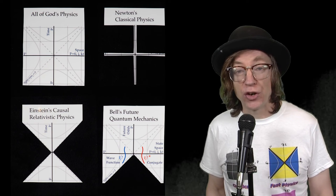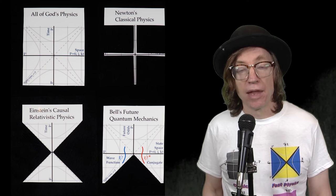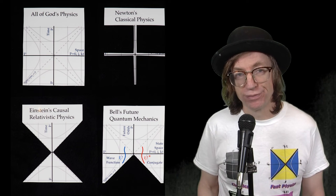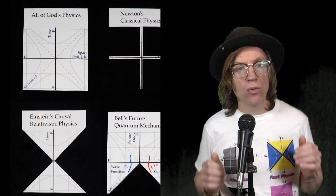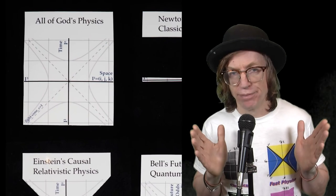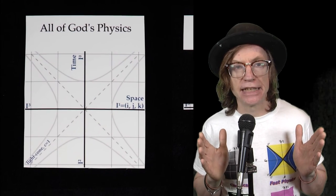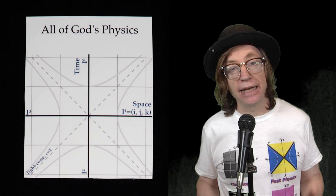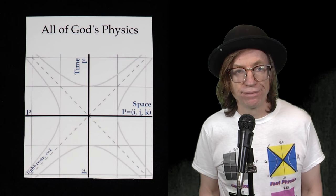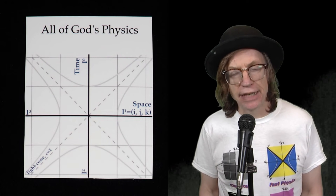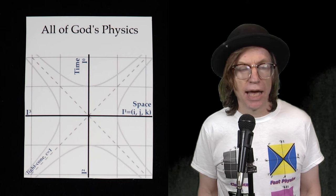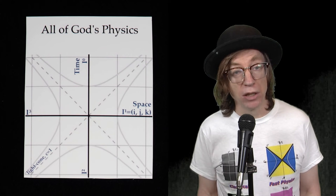Introducing Bell's Future Quantum Mechanics, a novel interpretation. Start with all of space-time. All branches of physics are confined to be in all of space-time. And I'm explicitly rejecting more than three spatial dimensions. I'm explicitly rejecting the multiverse.